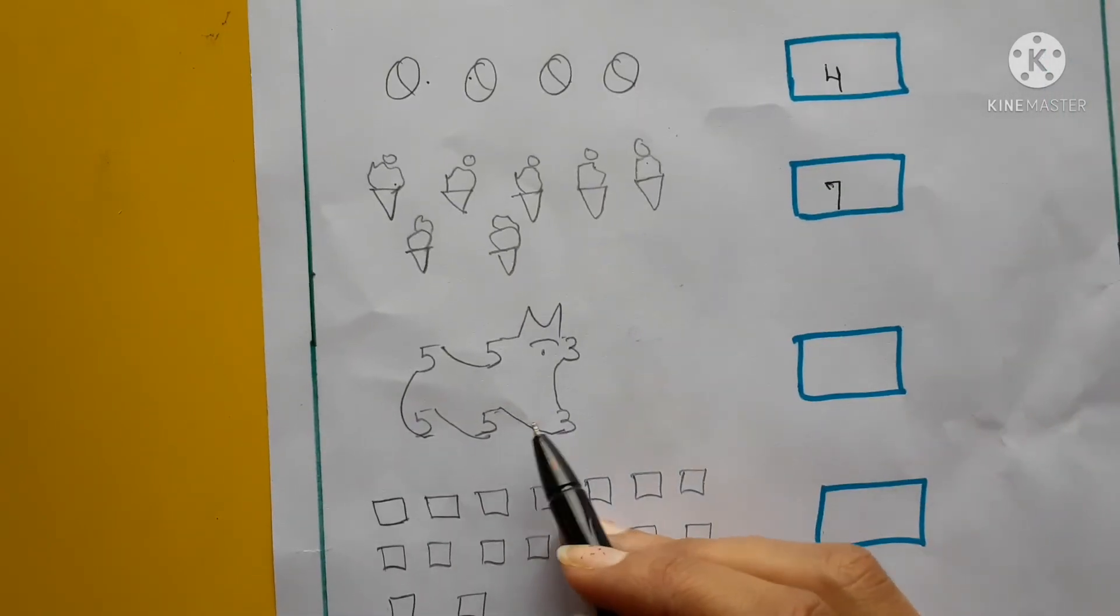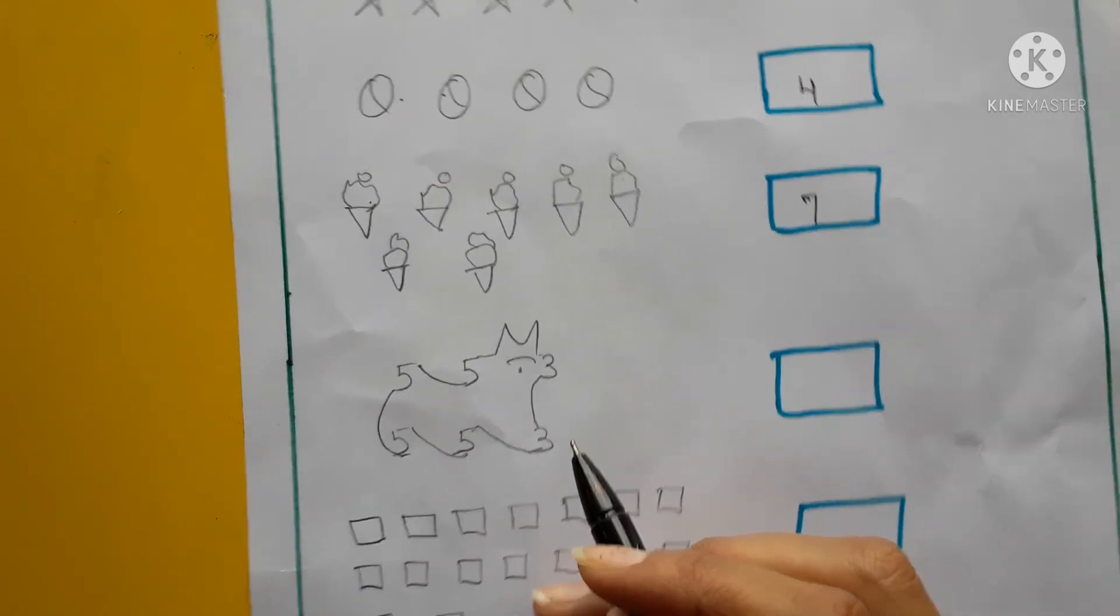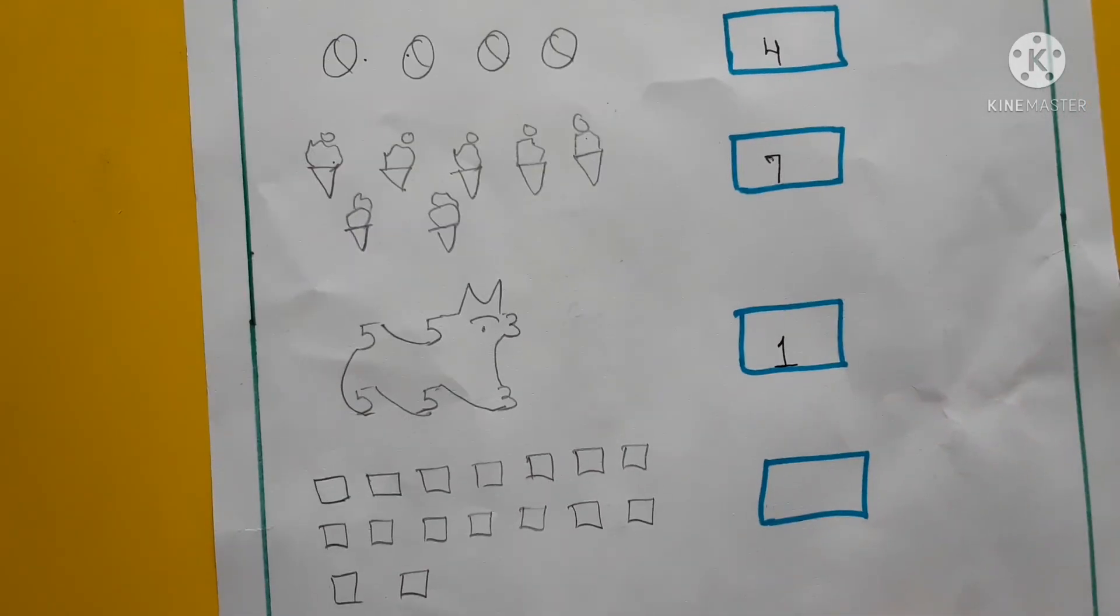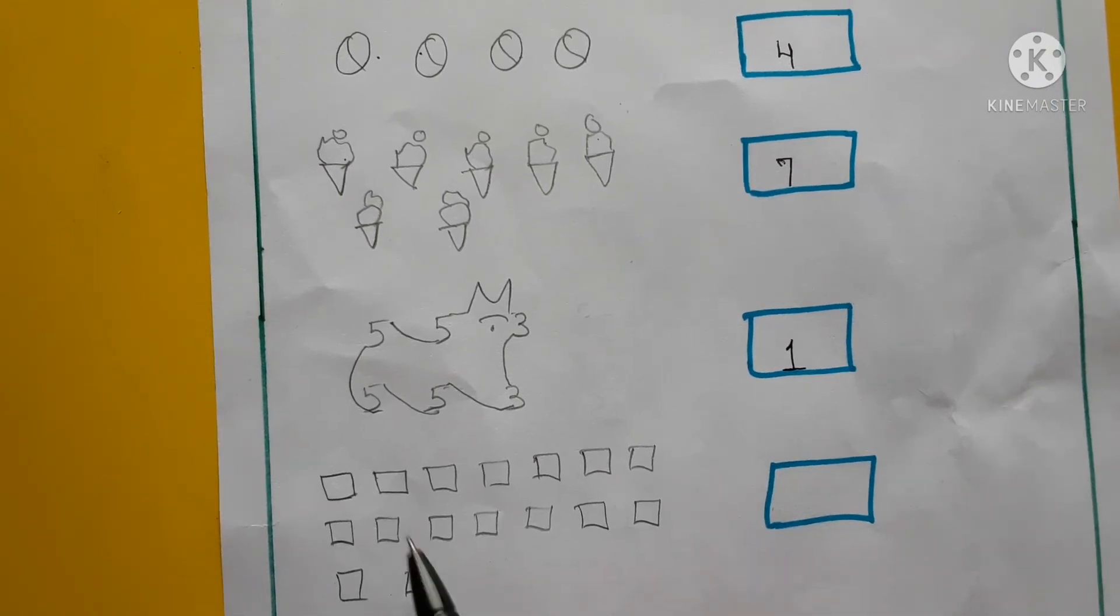Next, yeh dog hai. Kitne dogs hai? 1 hai na. Toh hum yaha pe 1 mention karna hai. Yeh toh aapko easily pata lag jayega ki yeh 1 hai, toh hum yaha 1 hi mention karna hai.